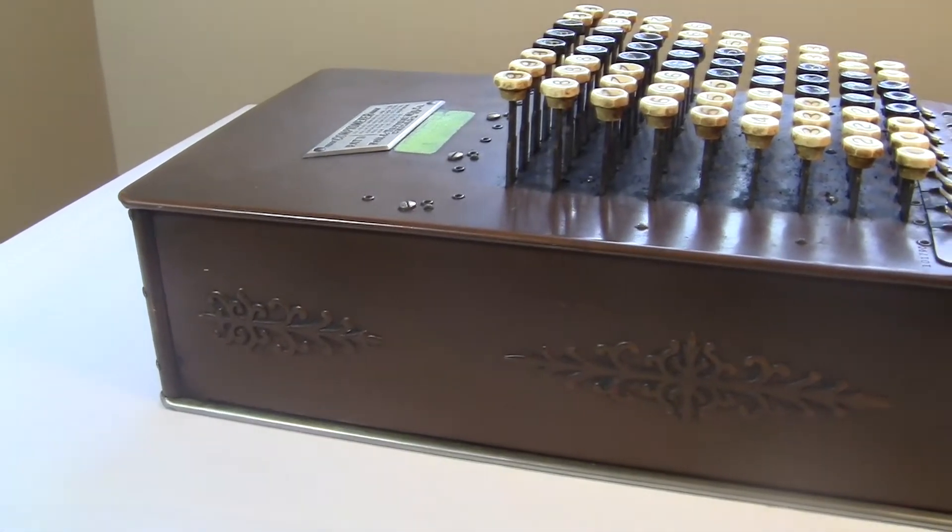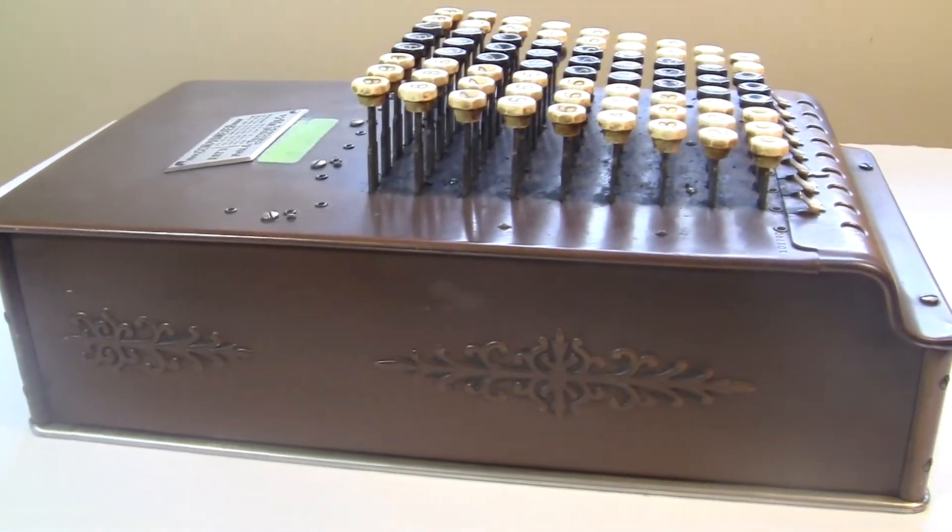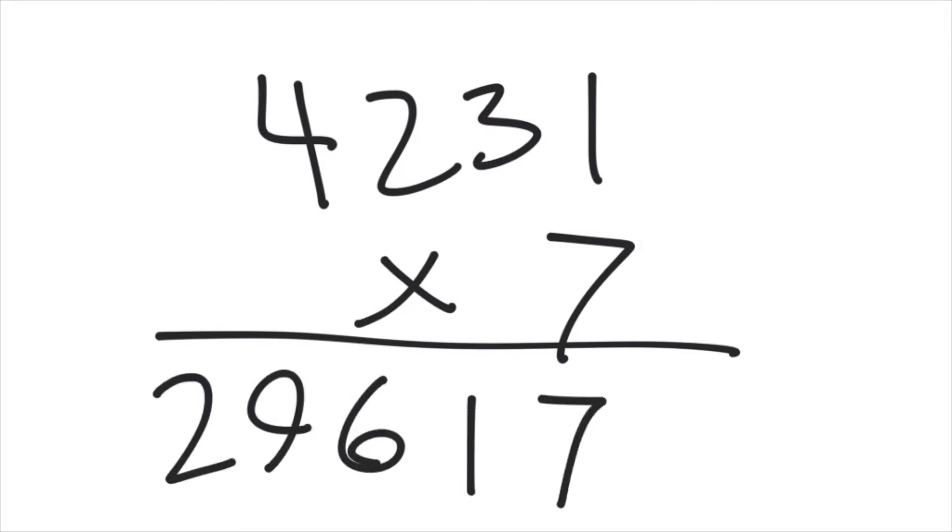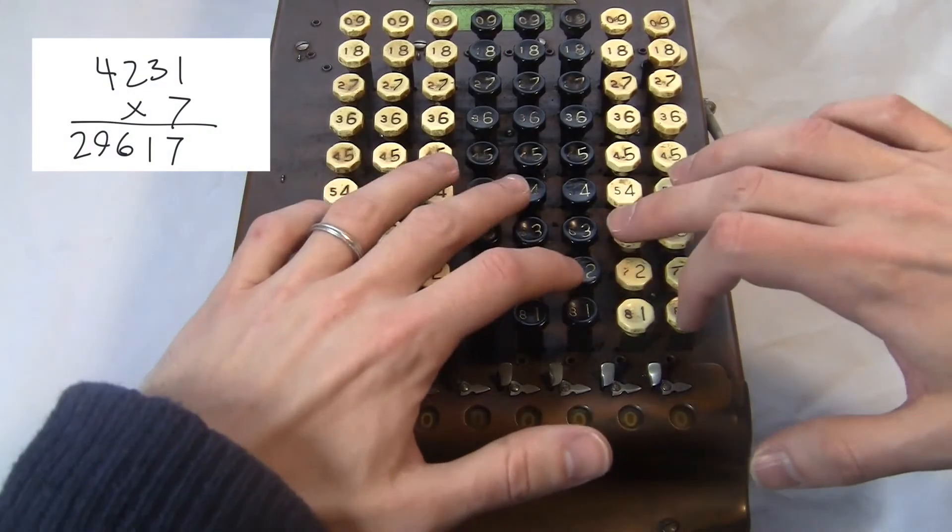Multiplication is pretty easy and intuitive. It's really easy if you're multiplying by a single digit like 7 times 4231. You just type the big number seven times.